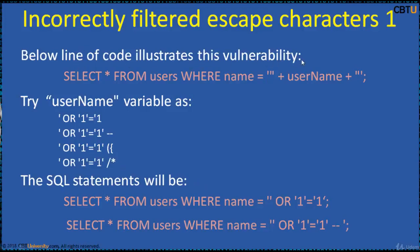This line of code illustrates this vulnerability: SELECT * FROM users WHERE name = username. This SQL code is designed to retrieve records of a specific username from the users table. However, if the username variable is crafted in a specific way by a malicious user, this SQL statement may do more than the author intended. For example, setting the username variable as ' OR 1=1 --.